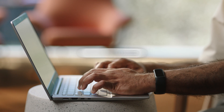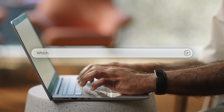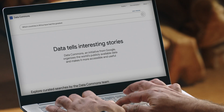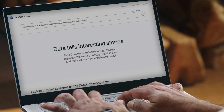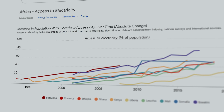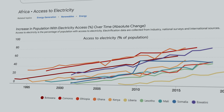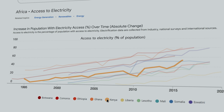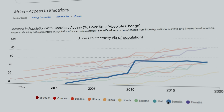Imagine, for example, I'm a climate NGO trying to understand how access to electricity has changed across countries in Africa. I'd search for it on Data Commons. From these charts, we can see that Kenya, Somalia, and Ghana have had some of the greatest increases in access to electricity.